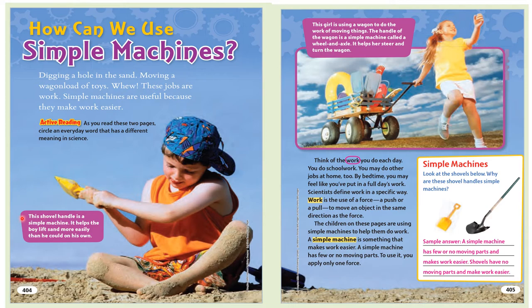This shovel handle is a simple machine. It helps the boy lift sand more easily than he could on his own. This girl is using a wagon to do the work of moving things. The handle of the wagon is a simple machine called a wheel and axle. It helps her steer and turn the wagon. Think of the work you do each day.